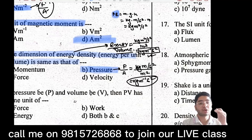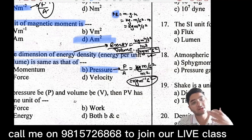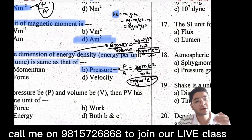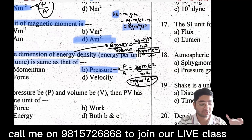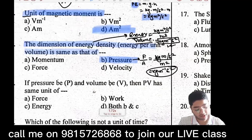In energy, whether you take potential energy or kinetic energy, the dimensional formula comes out the same: kg·m²·s⁻².